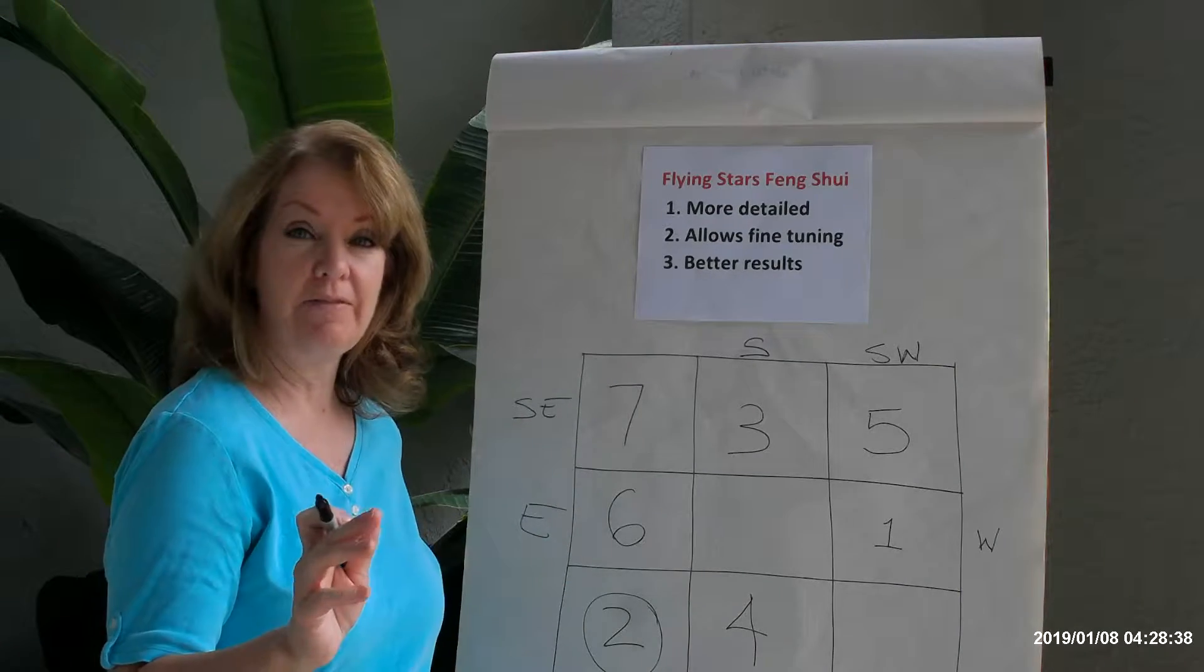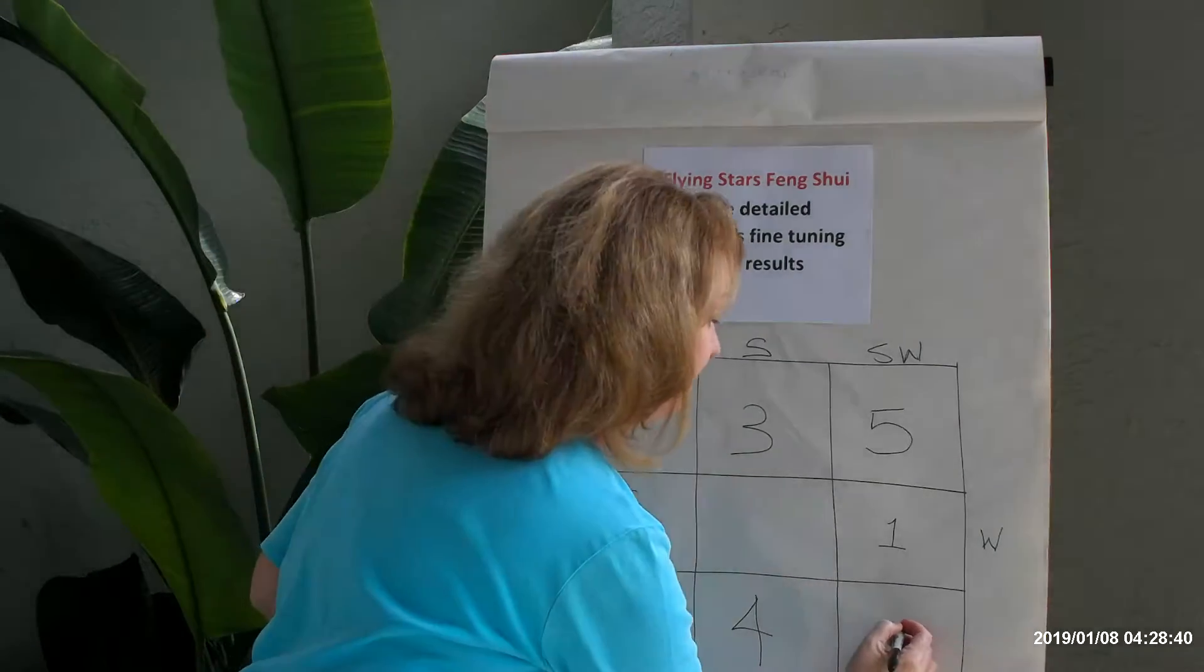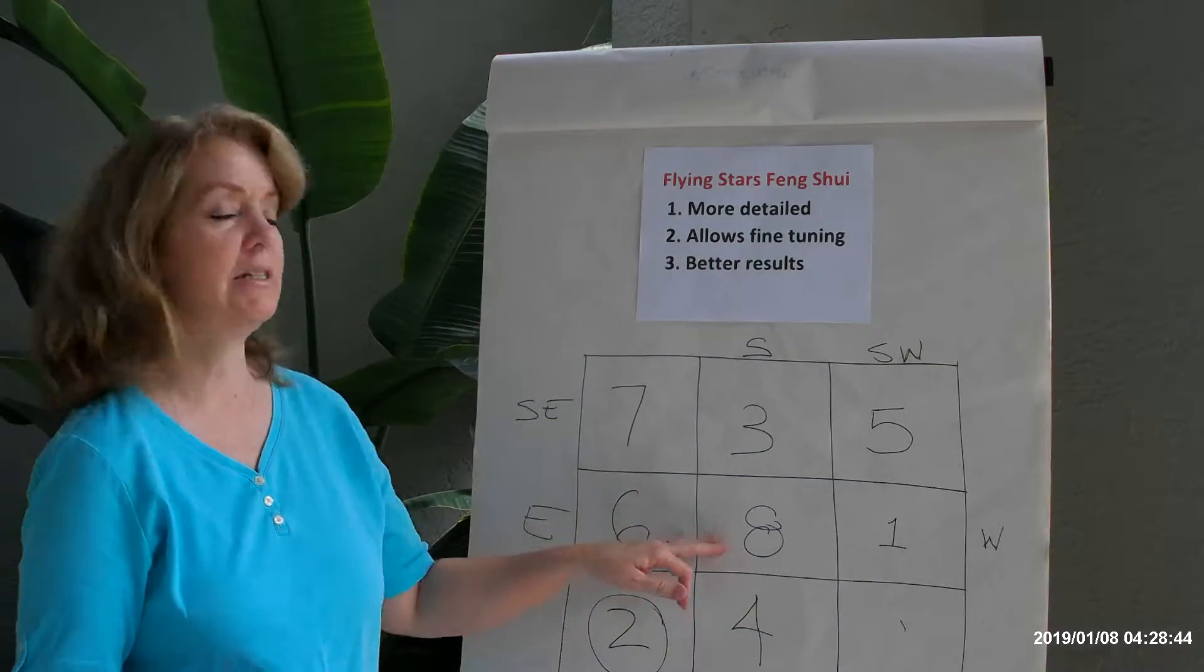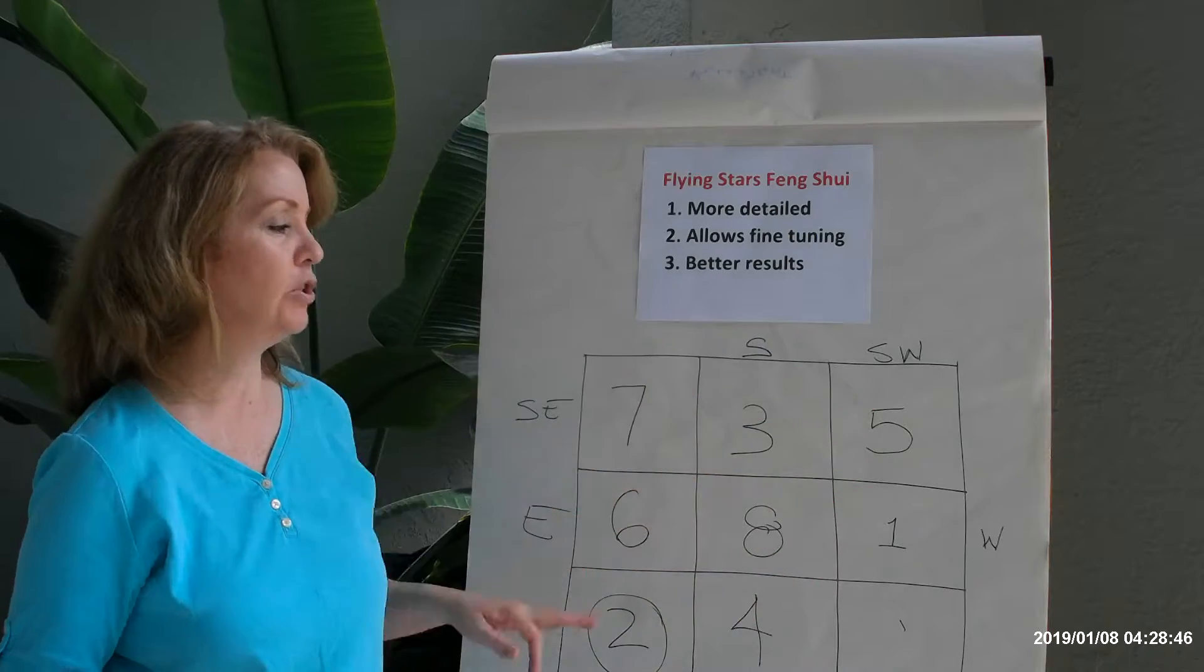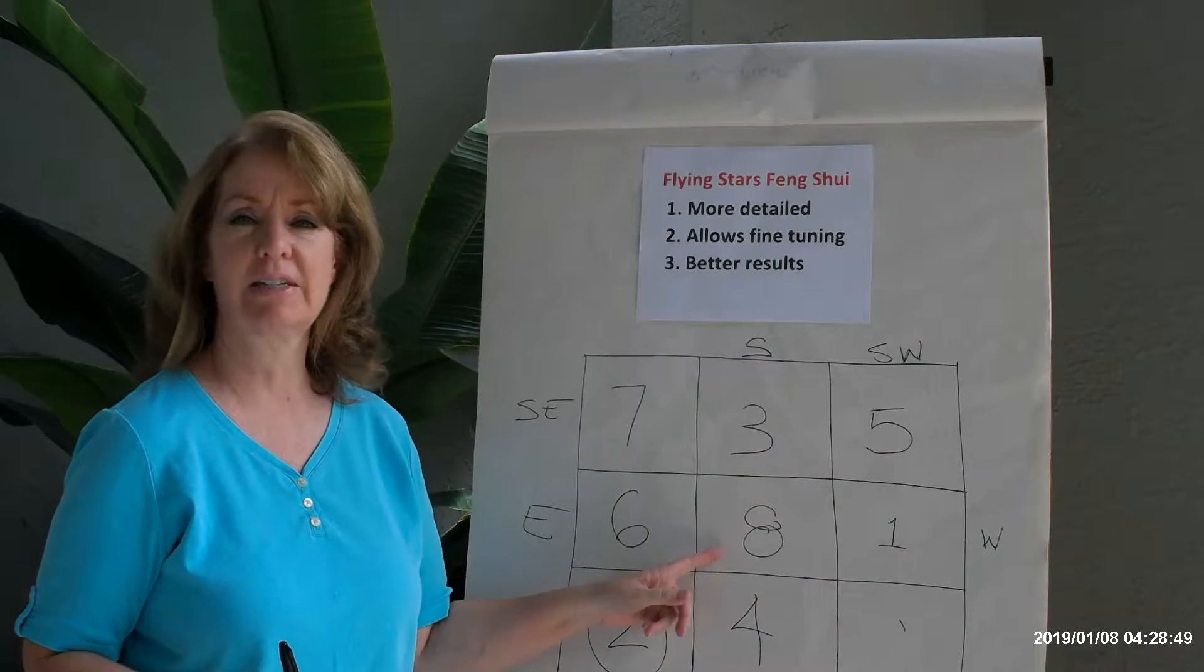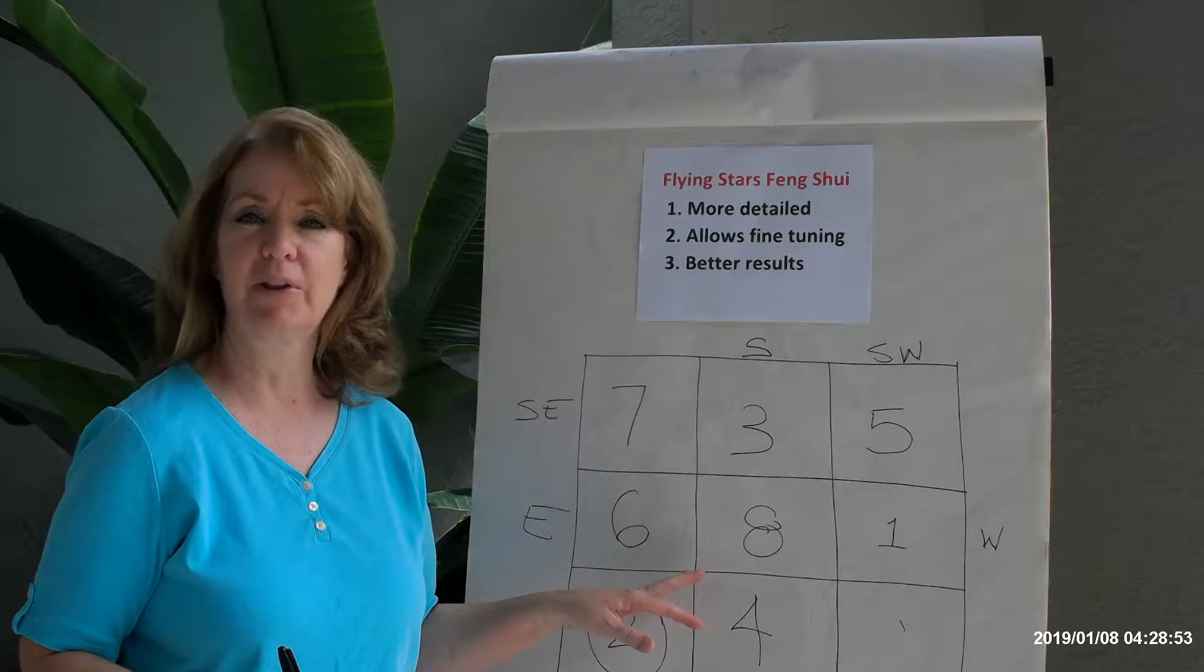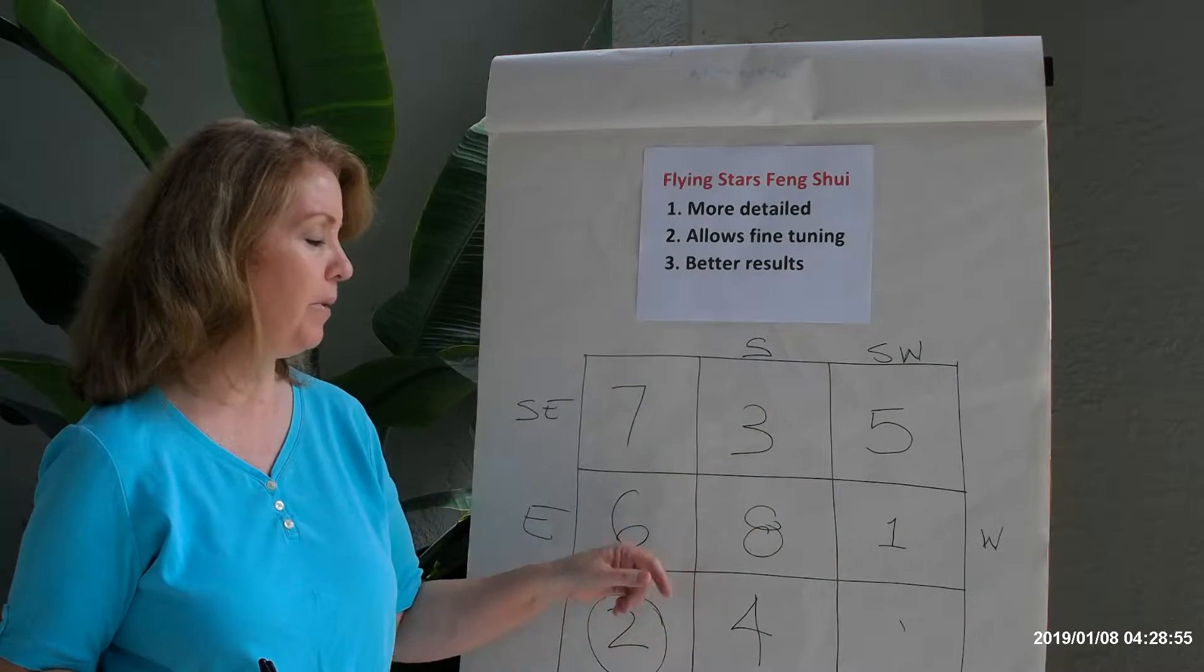So today we're going to be talking about flying star number eight. Flying star number eight sits in the center of the feng shui bagua. This is considered the center gua, the middle of the tic-tac-toe symbol if you will, for the feng shui bagua.